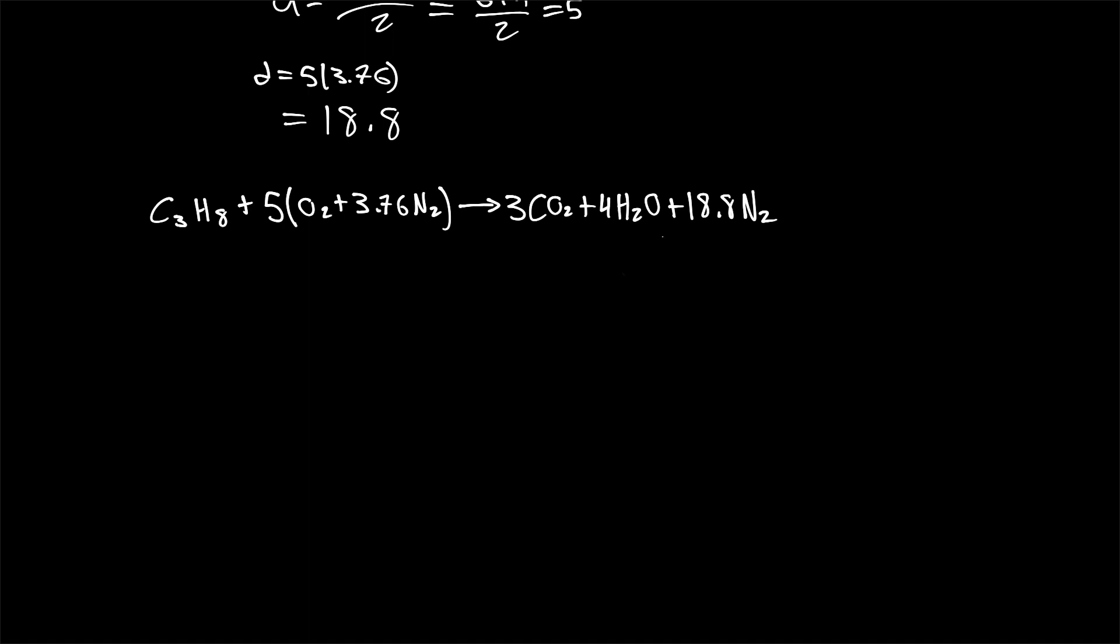Note that this is a very idealized situation. In reality, you would have some carbon monoxide from incomplete combustion, you might have some dissociation of the products, you might also have nitrogen oxide or nitrous oxide emissions as well. However, in this idealized case, we're using stoichiometric air, and we're just going to be calculating the adiabatic flame temperature based on that.